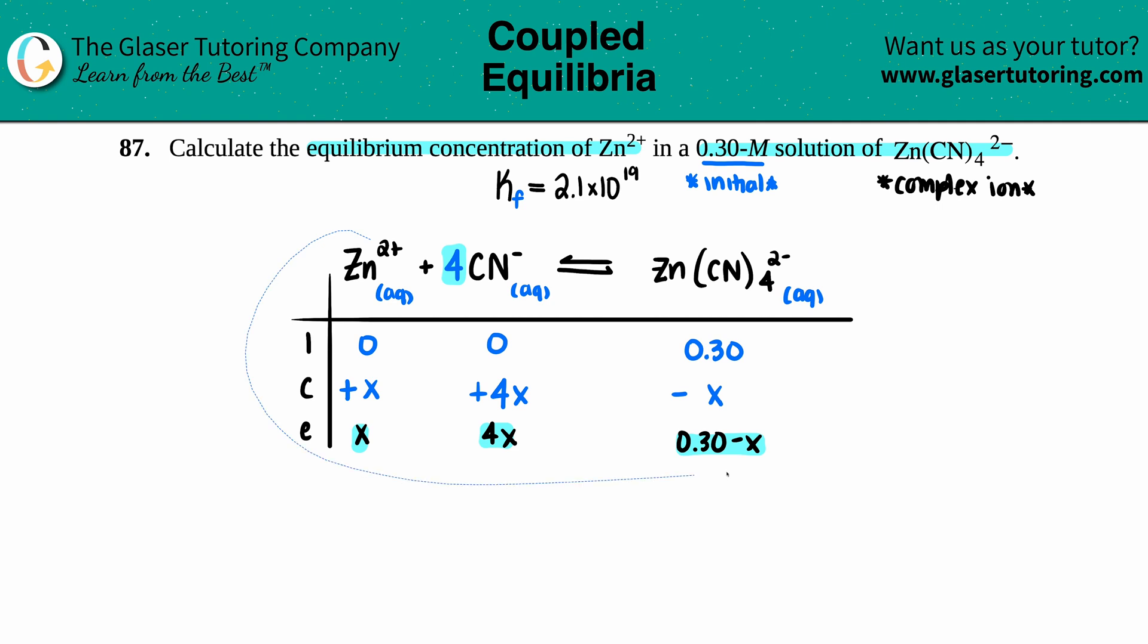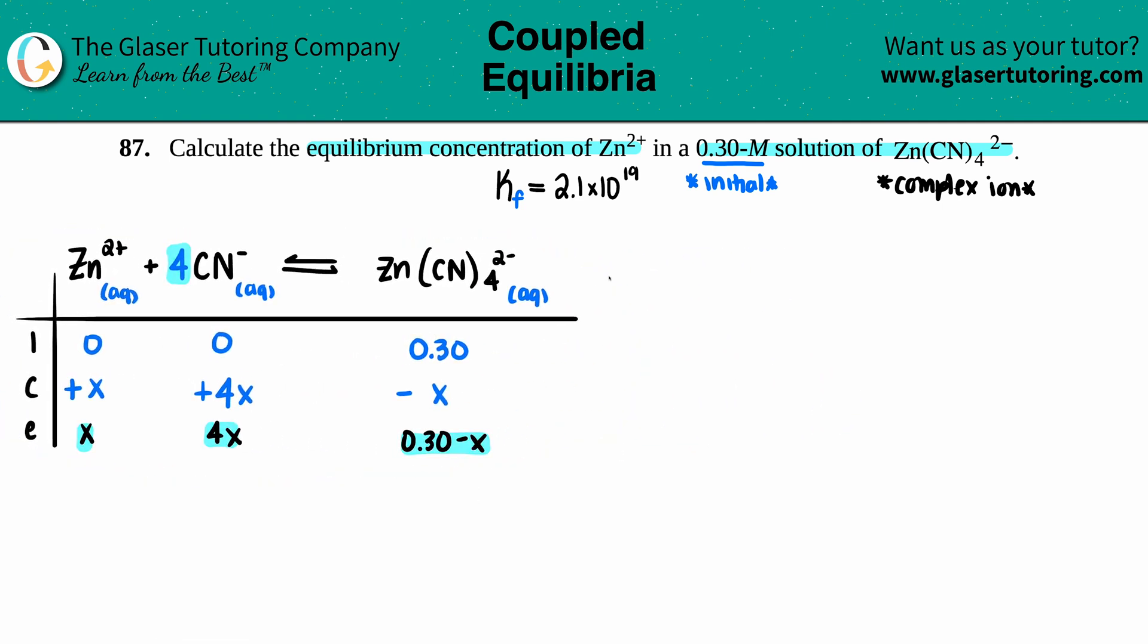Now let's write out our Kf expression. Kf equals the concentration of products divided by reactants. They're all aqueous, so they all get included. It would be the Zn(CN)₄²⁻ divided by the concentration of the two reactants, Zn²⁺ and CN⁻. Since CN has a 4 in front, I have to raise it to the fourth.